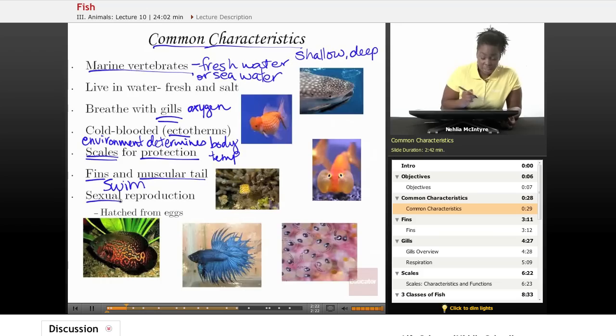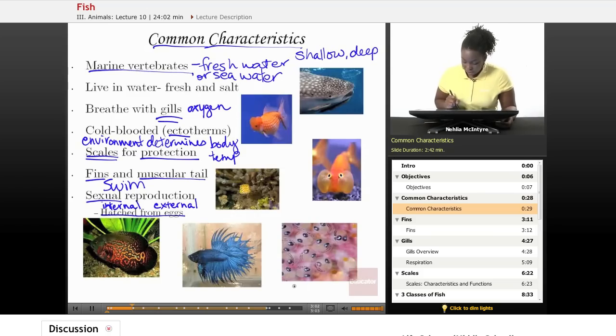Some fish have what we call internal fertilization, and that's when the male deposits its sperm into the female fish, and then the female fish eggs are fertilized that way. And some have external fertilization, which means that the female actually deposits thousands of eggs outside of her body, and then the male comes along and deposits its sperm in the same area, and that's how the fish are fertilized. Either way, the baby fish are hatched from these eggs, from the fertilized eggs. And here's a picture of fish eggs here. These are fertilized fish eggs. And then this is just various pictures of different types of fish.